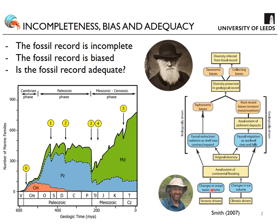Andrew Smith kick-started the renewal of interest in quantifying biases in the fossil record back around 2000–2001. He produced this schematic as part of a review paper published in the Journal of the Geological Society in 2007, identifying all of the drivers — tectonics, climate, biological drivers, geological drivers, and human sampling drivers — as a filter flowchart. Your fossil starts at the bottom and has to go through all of these filters before it can be counted within the biodiversity of the fossil record.